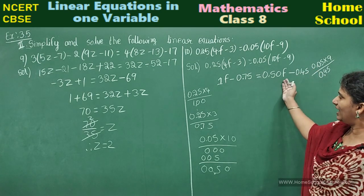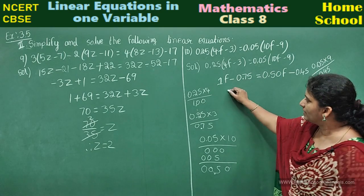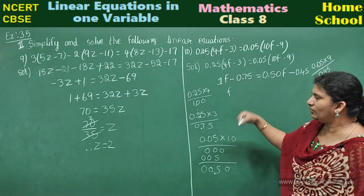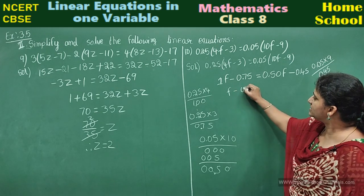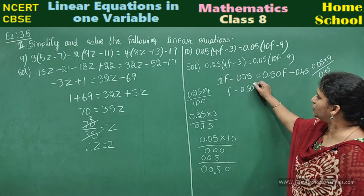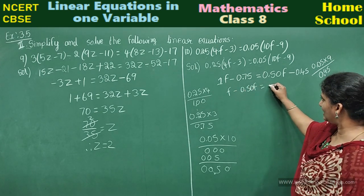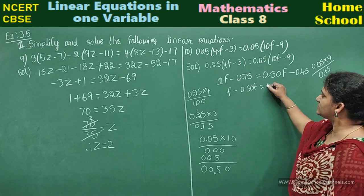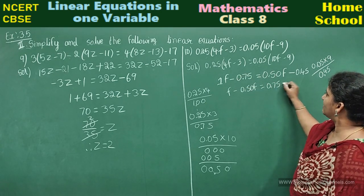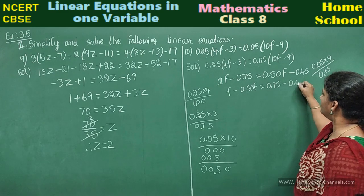And now f terms, bring this side. Only f you can write, or 1f also you can write. Minus 0.50f equals. This transpose to this side: 0.75 minus 0.45.